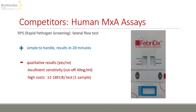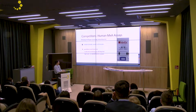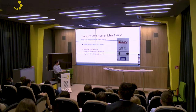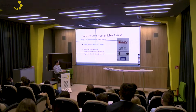There is another competitor I would like to mention: a lateral flow test from the company Rapid Pathogen Screening, a US-based company. The test determines MXA level together with CRP, which is a really good strategy — and we also recommend adding procalcitonin. The test is very simple and gives results very fast. On the other hand, the test is not quantitative, only qualitative. I think the test has insufficient sensitivity for applications such as neutralizing antibody development monitoring. And finally, the test has a very high cost — maybe double or triple our price per sample.